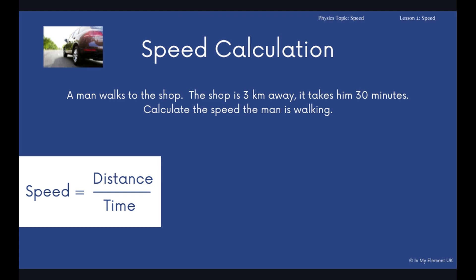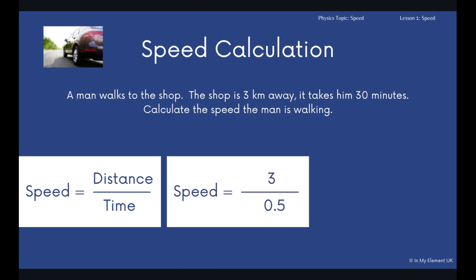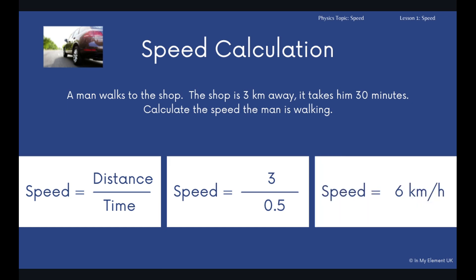So you're using speed equals distance over time again. So you've got 3, but notice we've not used 30. So the distance was 3 kilometers, and then 0.5 because 30 minutes is half an hour. So the speed that man has walked is 6 kilometers an hour.